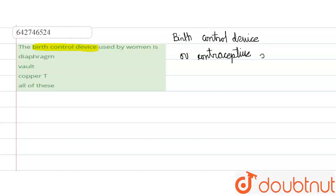It is an instrument which is used to prevent pregnancy. So let's see the options. First option is diaphragm.